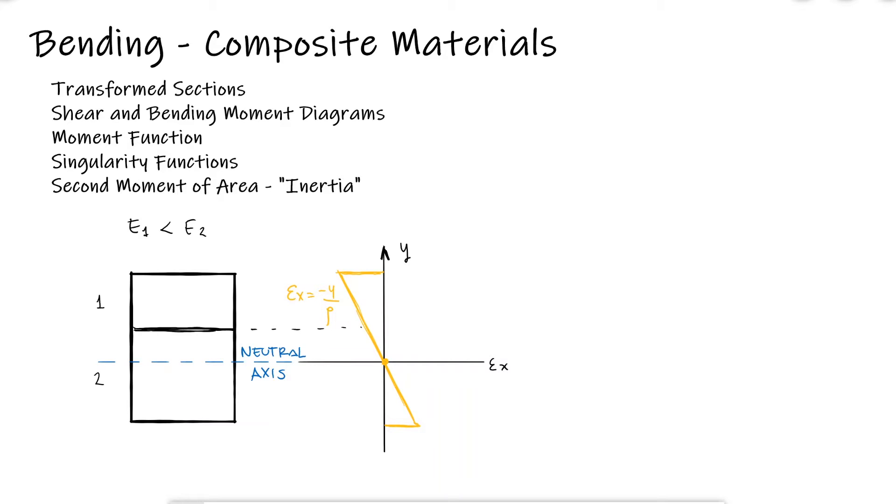If there was a discontinuity and the value of strain was different between 1 micron into material 2 and 1 micron into material 1, we would effectively have the surface at the boundary slipping with respect to each other, and therefore, we'd have the material literally breaking apart at the boundary.